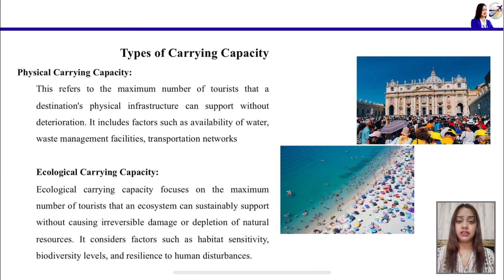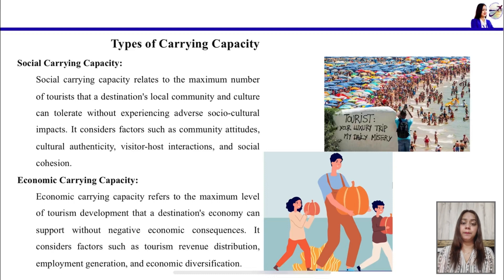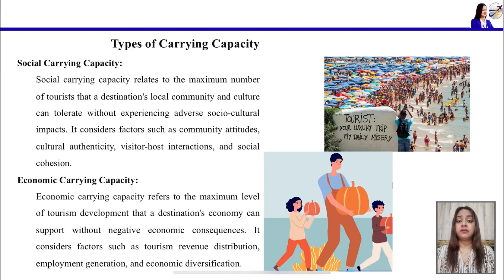The next type is social carrying capacity, which refers to the maximum number of tourists that a destination's local community and culture can tolerate without experiencing any adverse socio-cultural impact — meaning the community of local people should not be negatively affected by the flow of tourism. As shown in the picture, tourists are enjoying themselves but are disturbing the local people.